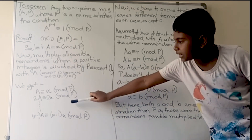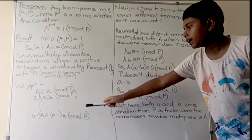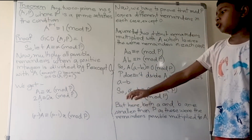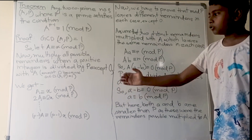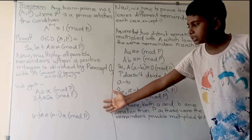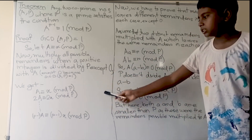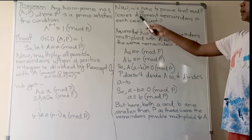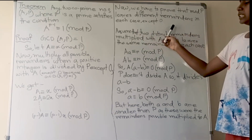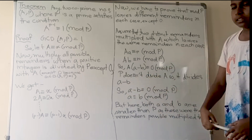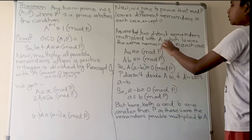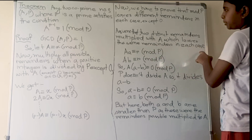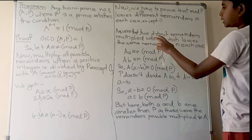Now we need to prove that these products can be greater than p but when reduced mod p they leave distinct remainders. We must show that no two of these congruence equations produce the same remainder. So assume that two distinct remainders multiplied with a leave the same remainder mod p.